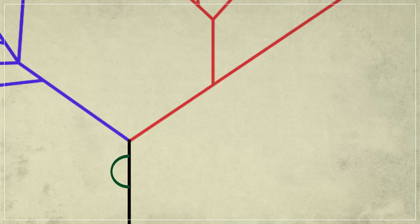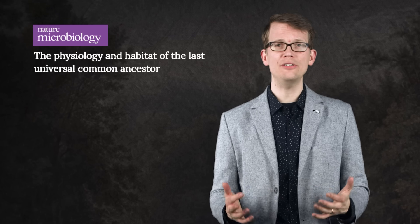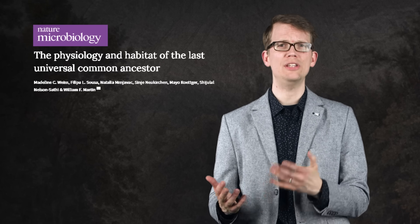In this case, LUCA would sit just below where those two main branches separate, before eukaryotes even formed. And based on this new line of thinking, a surprisingly complete picture of LUCA was published in 2016 in the journal Nature Microbiology.